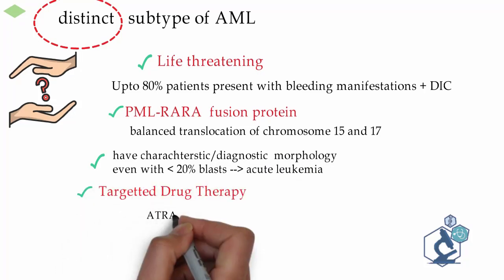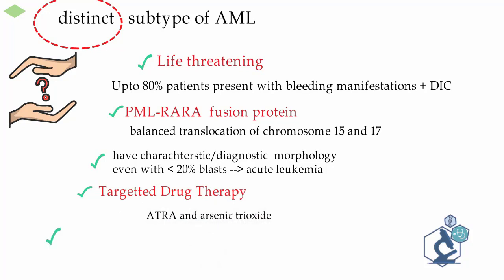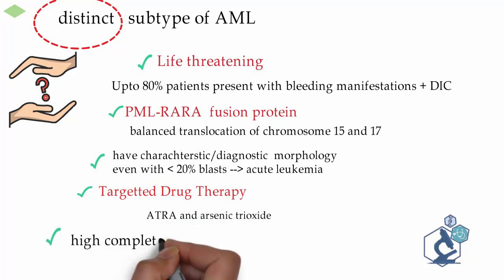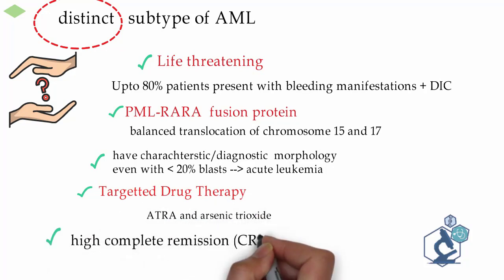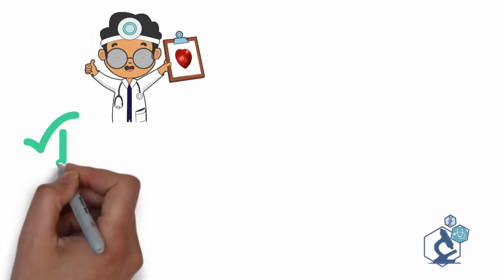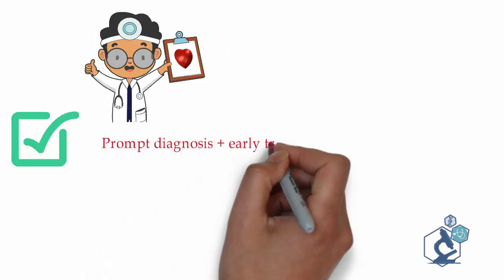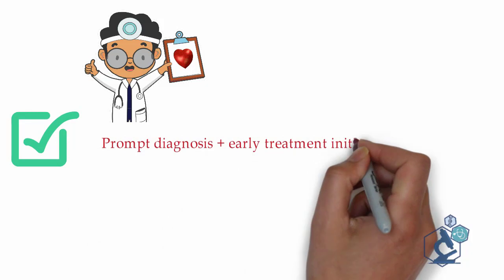APML has targeted drug therapy with good response rates to ATRA and ATO. Patients have high complete remission rates of up to 90%. In brief, prompt diagnosis coupled with easily targeted treatment gives excellent prognosis.